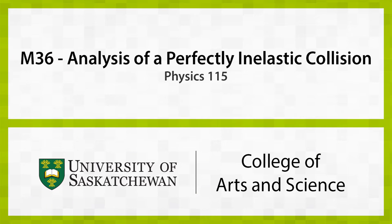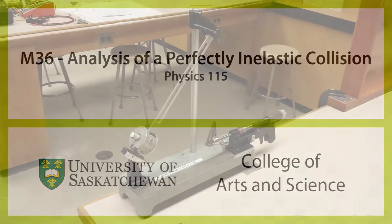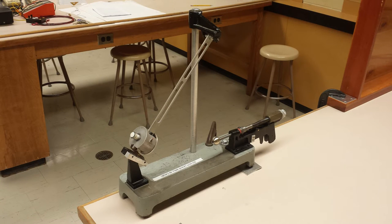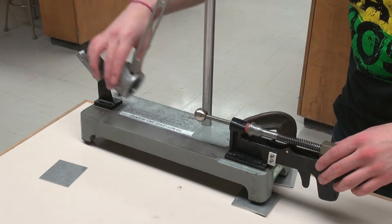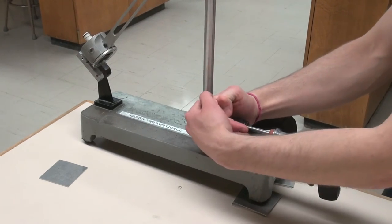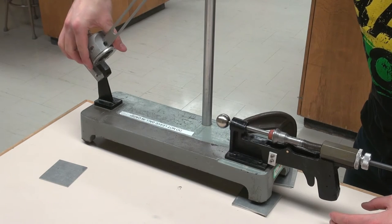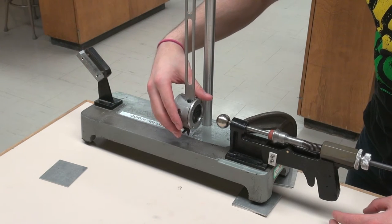The object of this experiment is to examine a perfectly inelastic collision between a steel ball and a ballistic pendulum. The ballistic pendulum consists of a cage attached to an arm that can rotate. A spring-loaded gun mounted to the apparatus is used to fire the steel ball into the cage. The collision of the ball with the cage is perfectly inelastic because the ball remains in the cage after the collision.